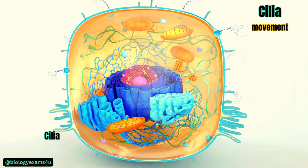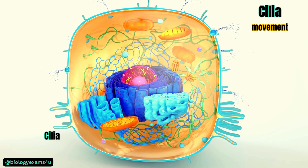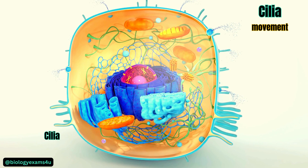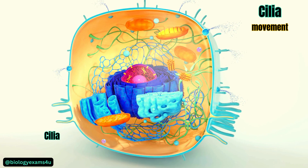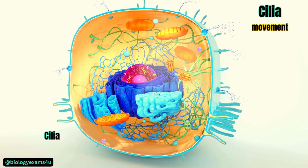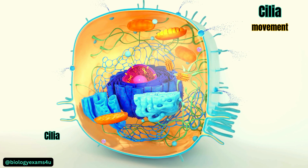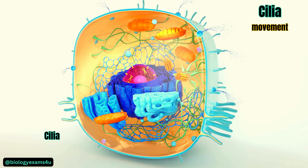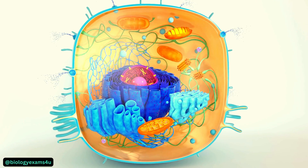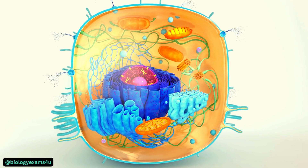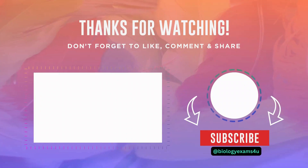Cilia have different functions within a multicellular organism. For example, the respiratory tract in humans is lined with cilia that keep inhaled dust, smoke, and potentially harmful microorganisms from entering the lungs. We have now covered the arrangement of different cell organelles within the animal cell and their functions.